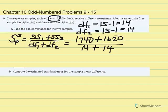In our calculators, 1740 plus 1620 divided by 14 plus 14, which is 28, gives us 120. So the pooled variance is equal to 120.